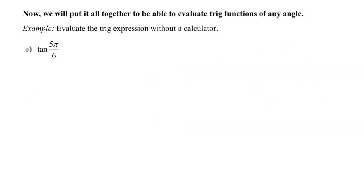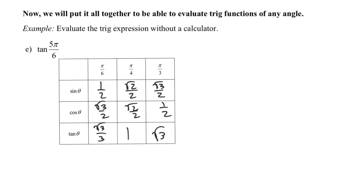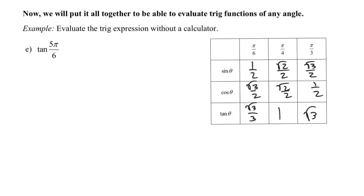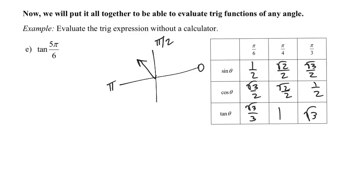Here in example E, we have tangent of five pi over six. That is not a quadrantal angle, it is in a quadrant, so we need the chart of values. Five sixths is smaller than one but bigger than a half, so five pi over six is between pi over two and pi — that puts it in quadrant two. In quadrant two, tangent is negative. So this equals negative tangent of the reference angle for five pi over six, which is pi over six. Tangent of pi over six is square root of three over three, so the answer is negative square root of three over three.